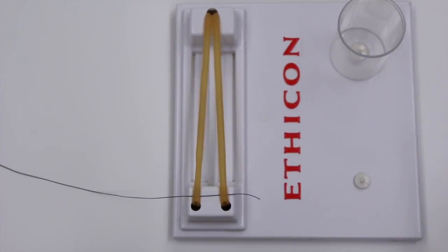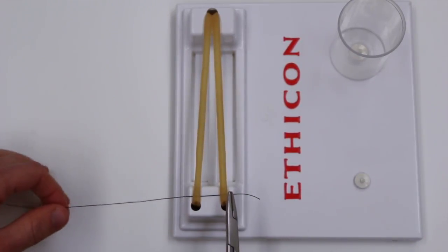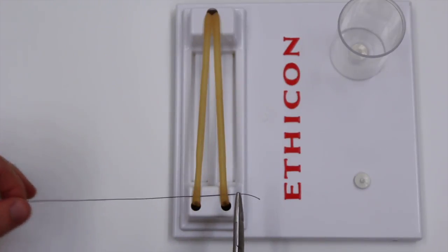So again tying an instrument tie, I'll show one issue that can come up is just having tissues that won't quite approximate which is being simulated by these tubes.